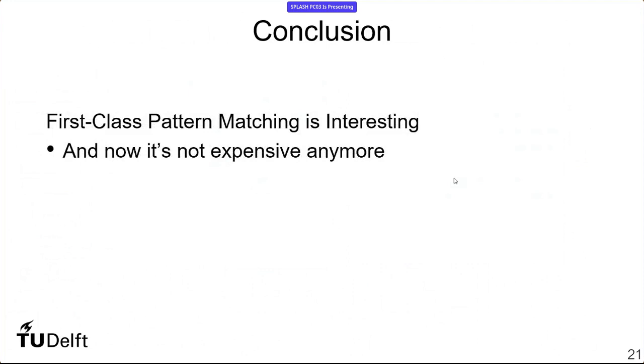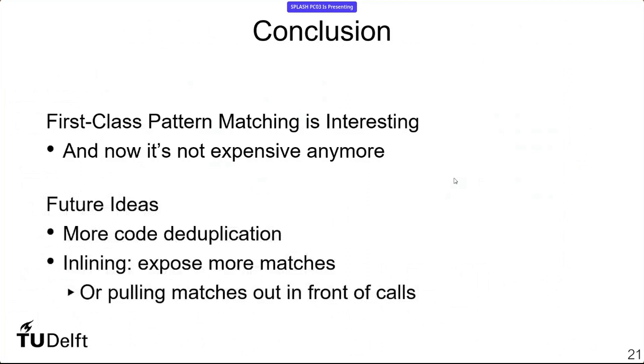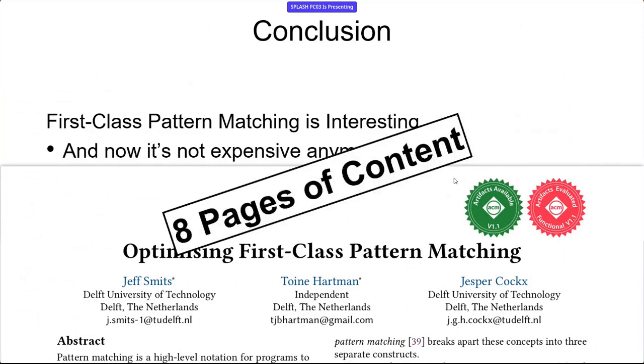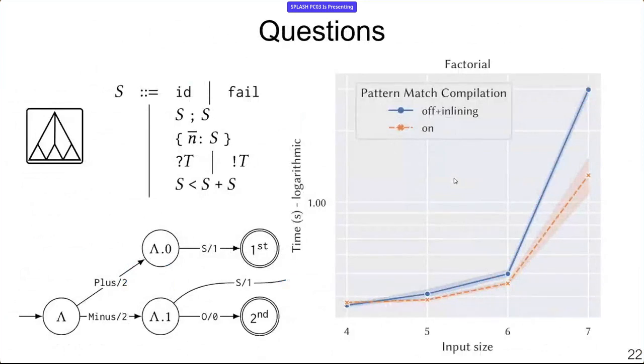So in conclusion, I hope I've managed to convince you that first-class pattern matching is interesting, and now you don't need to be scared to put it in your language because it's not expensive anymore. We do have some ideas for future work, including trying to deduplicate some of the code that gets duplicated currently, and trying to expose more matches that are currently hidden behind function calls, either by simply inlining or by pulling out the first match in front of the call. The paper is available along with an artifact where you can also read on the benchmarks. I've really tried to keep the paper short and sweet. It's only eight pages, so I encourage you to read it. And that's my presentation.